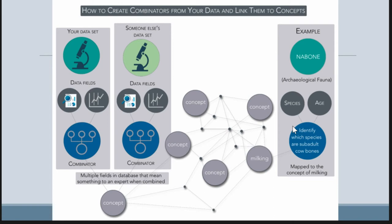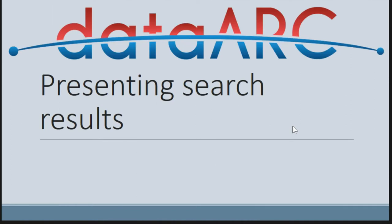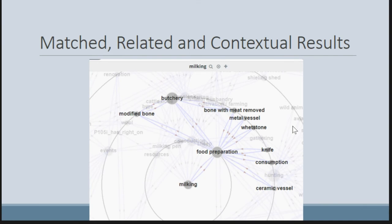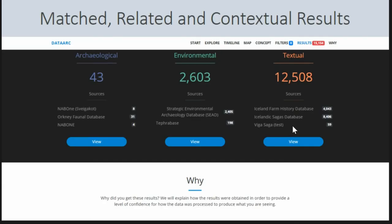This process of experts saying 'this set of things is meaningful when combined' is a big part of our process. We've also thought a lot about how to present search results in a readable and usable way. We have a hierarchy of matched, related, and conceptual results: things directly related to your search, things one degree away as related results, and conceptual results two degrees away on the concept map. These results are grouped by general theme — archaeological, environmental, and textual. The idea is that an archaeologist searching on a familiar concept gets back not just archaeological results, but relevant textual and environmental data sitting right next to it, suggesting you might also want to look at this data.